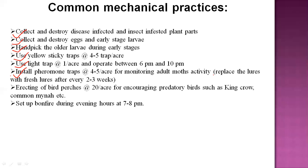Erect bird perches — T-shaped sticks — to attract and encourage predatory birds like king crow, myna, and sparrow. Installing at the rate of 20 per acre helps manage different types of larvae and other pests. Also, set up a bonfire during the evening to attract and destroy fruit sucking moths that are attracted towards the pomegranate orchard.